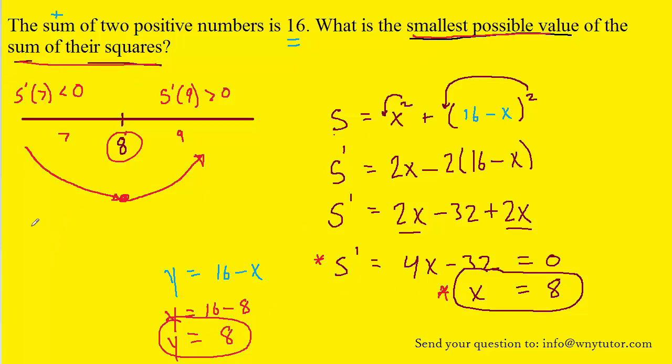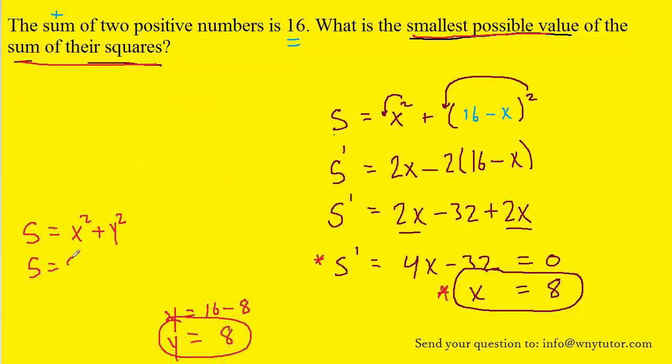So we actually need to find the sum of their squares in order to finish this problem off, and for that we return back to the original objective equation, which was x squared plus y squared. We can plug in our known values for x and y. When we do that, we're going to have 64 plus 64, which gives us the sum that the question was asking for. So 128 becomes the final answer.